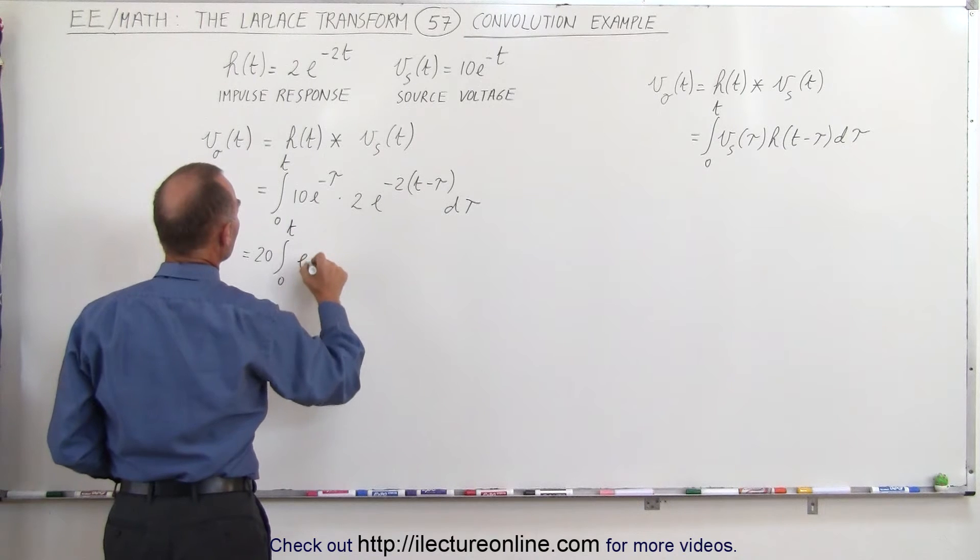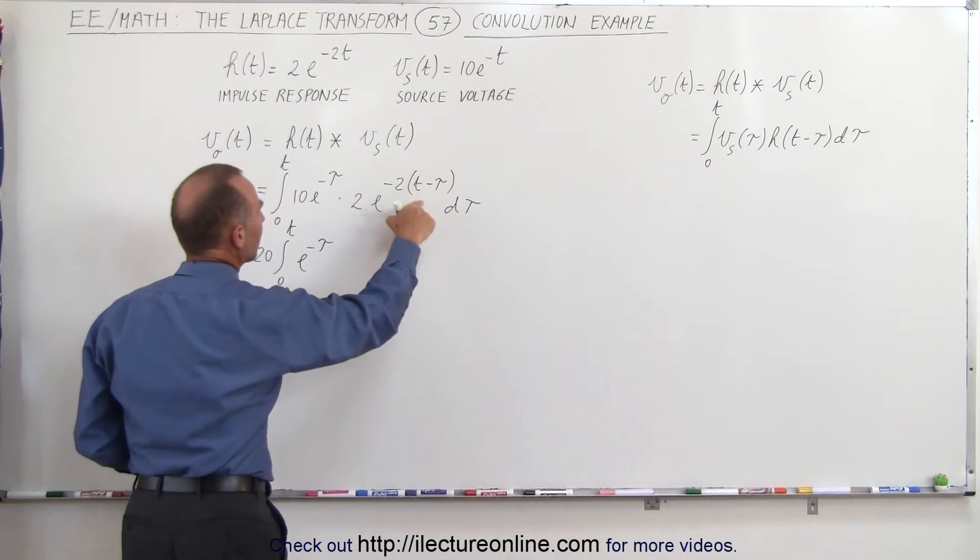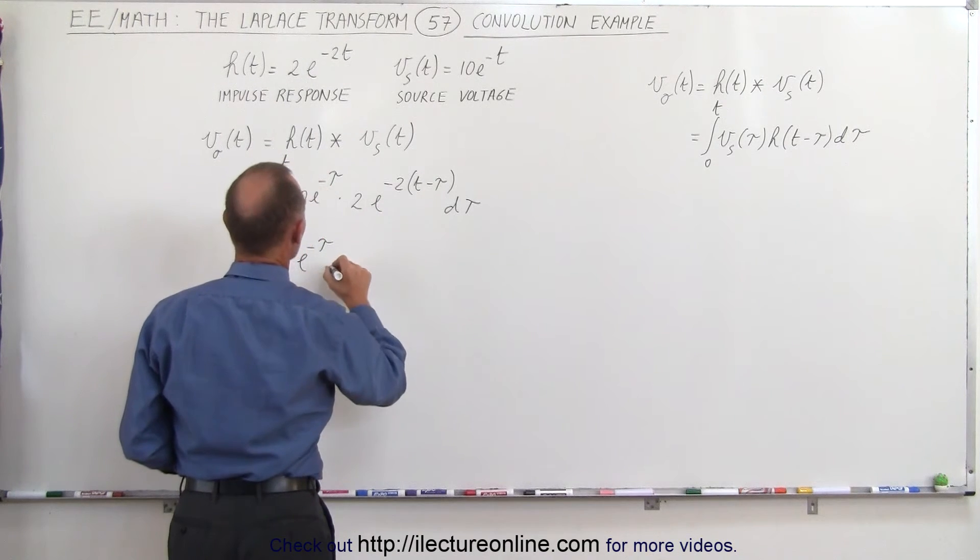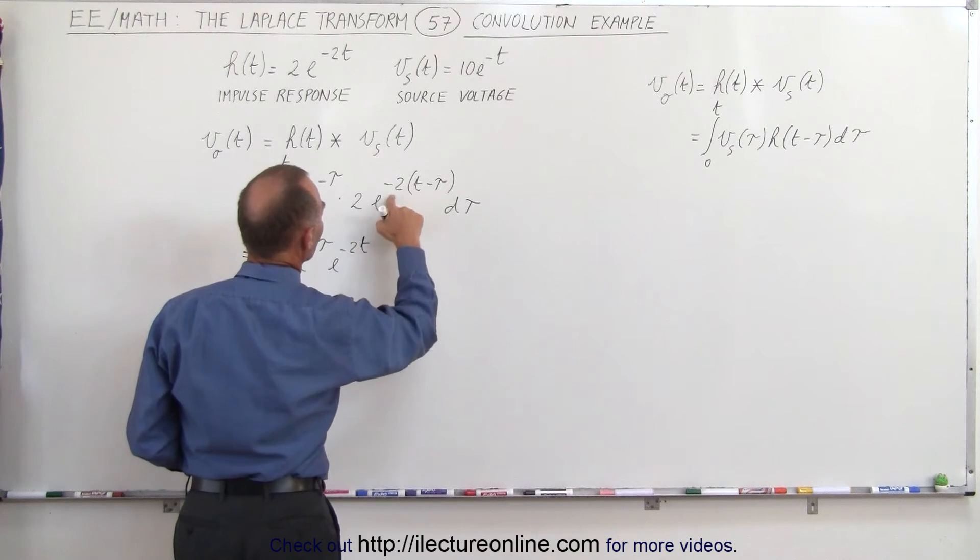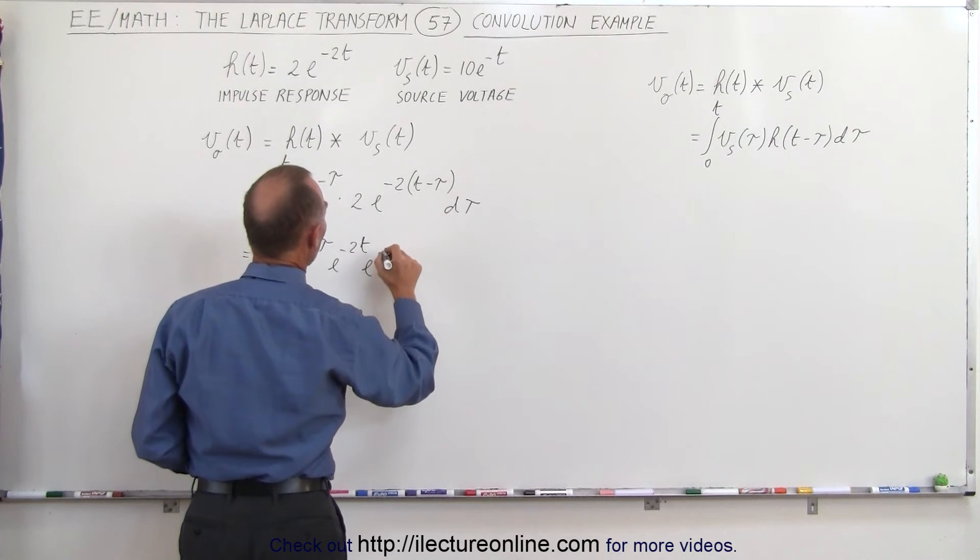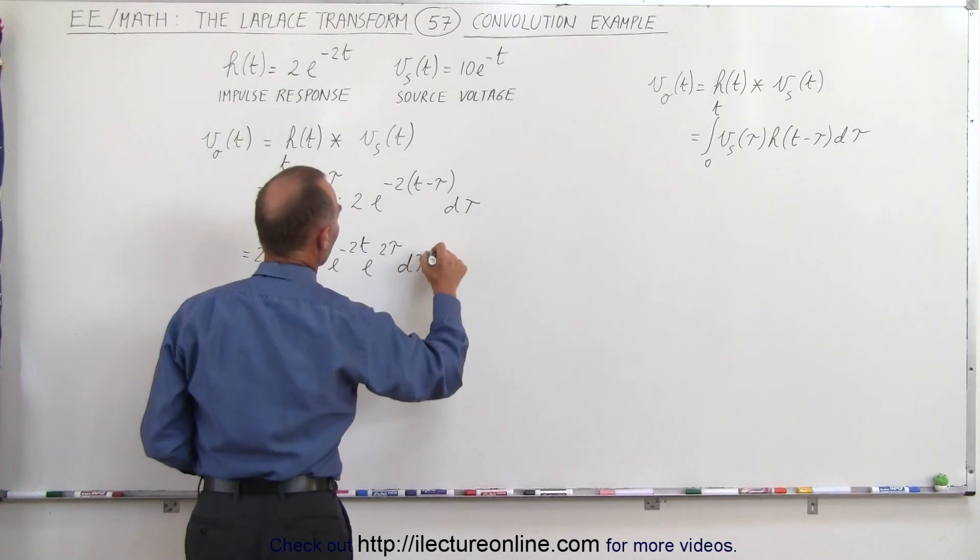The integral of e to the minus tau, and here when we apply that, we can write this as e to the minus 2t, and this times this will give us e to the positive 2 tau d tau.